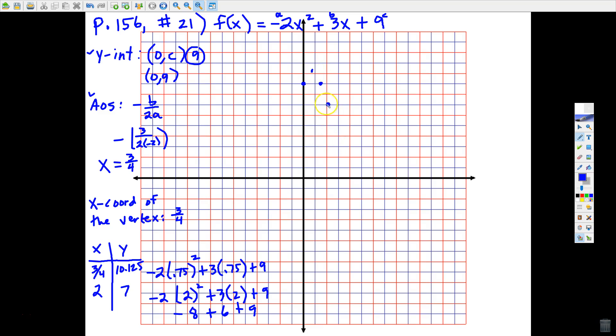And that is 1 and 1 fourth away from the AOS. Remember, these points have to be the same distance away from the AOS, just in the opposite direction. So using some fraction knowledge, if I do 3 fourths plus 1 half, 3 fourths plus 2 fourths, that's 5 fourths, and that's 1 and 1 fourth away.